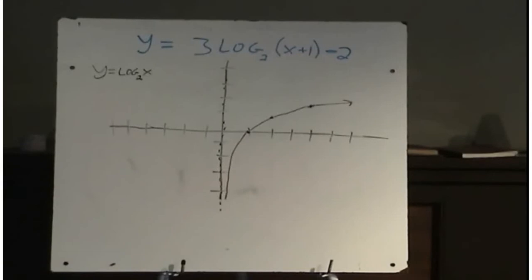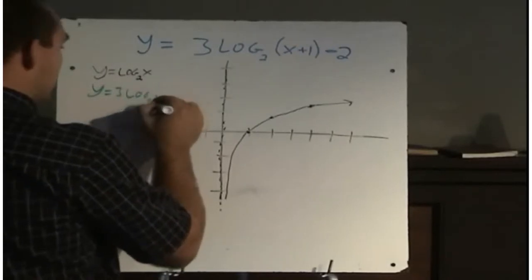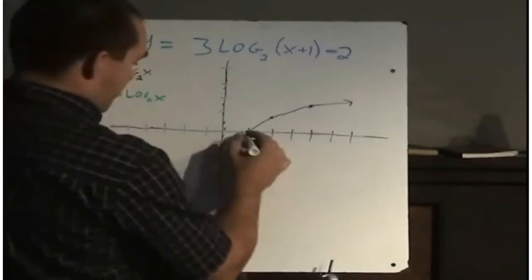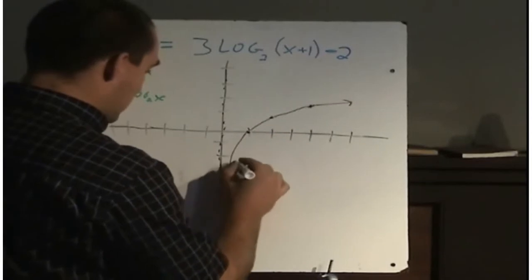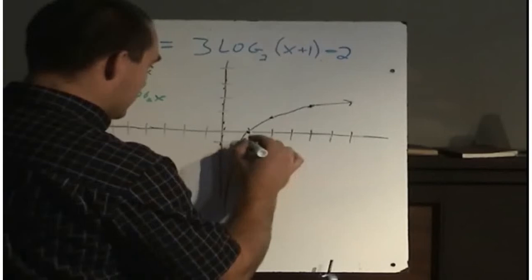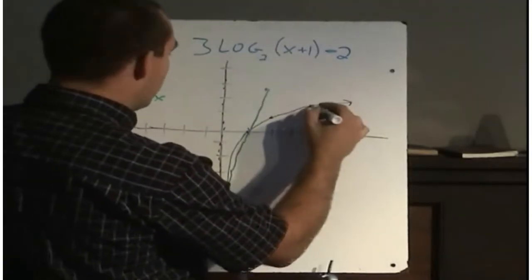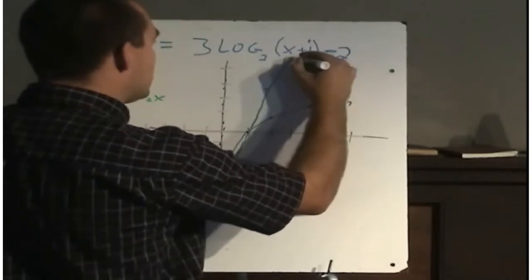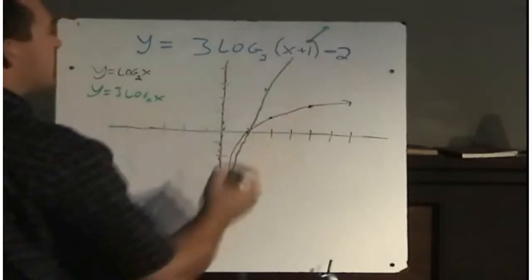The first transformation is a vertical expansion by a factor of 3, so we draw y equals 3 log base 2 of x. I need to triple all my y-values: tripling 0 is still 0, tripling 1 is 3, and tripling 2 is 6. Just got to remember this is a y-value of 6, but it's off my scale.